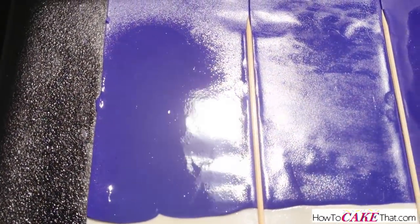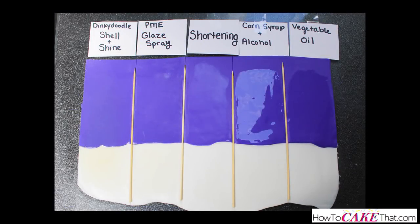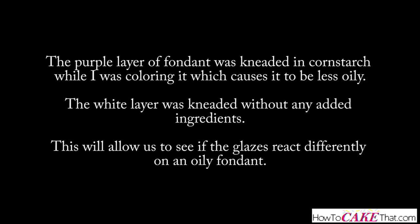For this demonstration I am using Wilton fondant. I colored and rolled out a layer of dark purple fondant, and then rolled out a white layer just below the purple. The purple layer was kneaded in cornstarch while I was coloring it, which causes it to be less oily. The white layer was kneaded without any added ingredients.